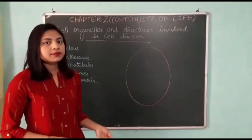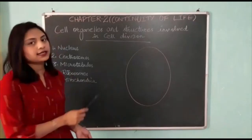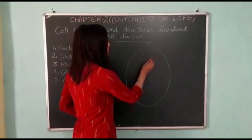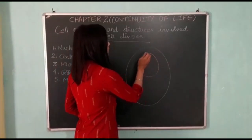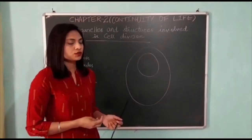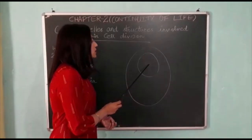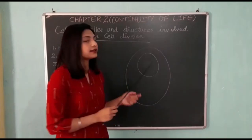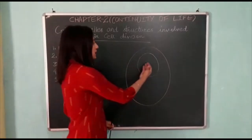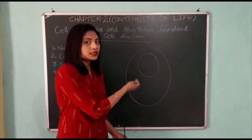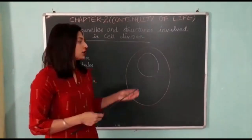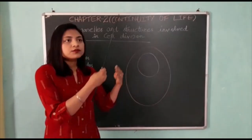These organelles are very important as they play a very important role in cell division. First of all, the nucleus — this is the most important organelle of a cell which is required for cell division, as chromosomes are present within it.